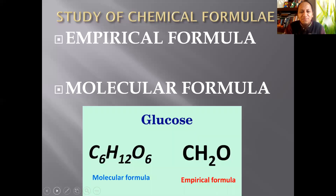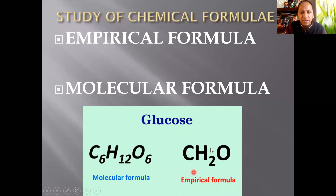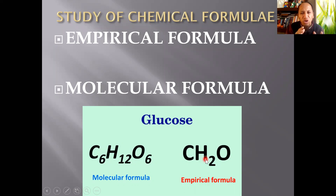For example, glucose: the molecular formula is C6H12O6. Its empirical formula is CH2O, because when you simplify C6H12O6 by dividing all subscripts by 6, you get: 6÷6=1 for carbon, 12÷6=2 for hydrogen, and 6÷6=1 for oxygen. That's why the empirical formula represents the smallest ratio of the molecular formula.